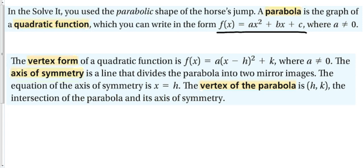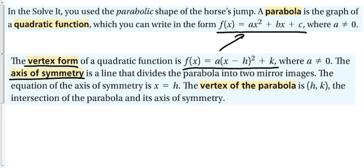That formula is standard form. Today in this section we're going to talk about vertex form. The vertex form of a quadratic function is f(x) = a(x − h)² + k, where a ≠ 0. The axis of symmetry is the line that divides the parabola into two mirror images, and its equation is x = h. The vertex of the parabola is (h, k).